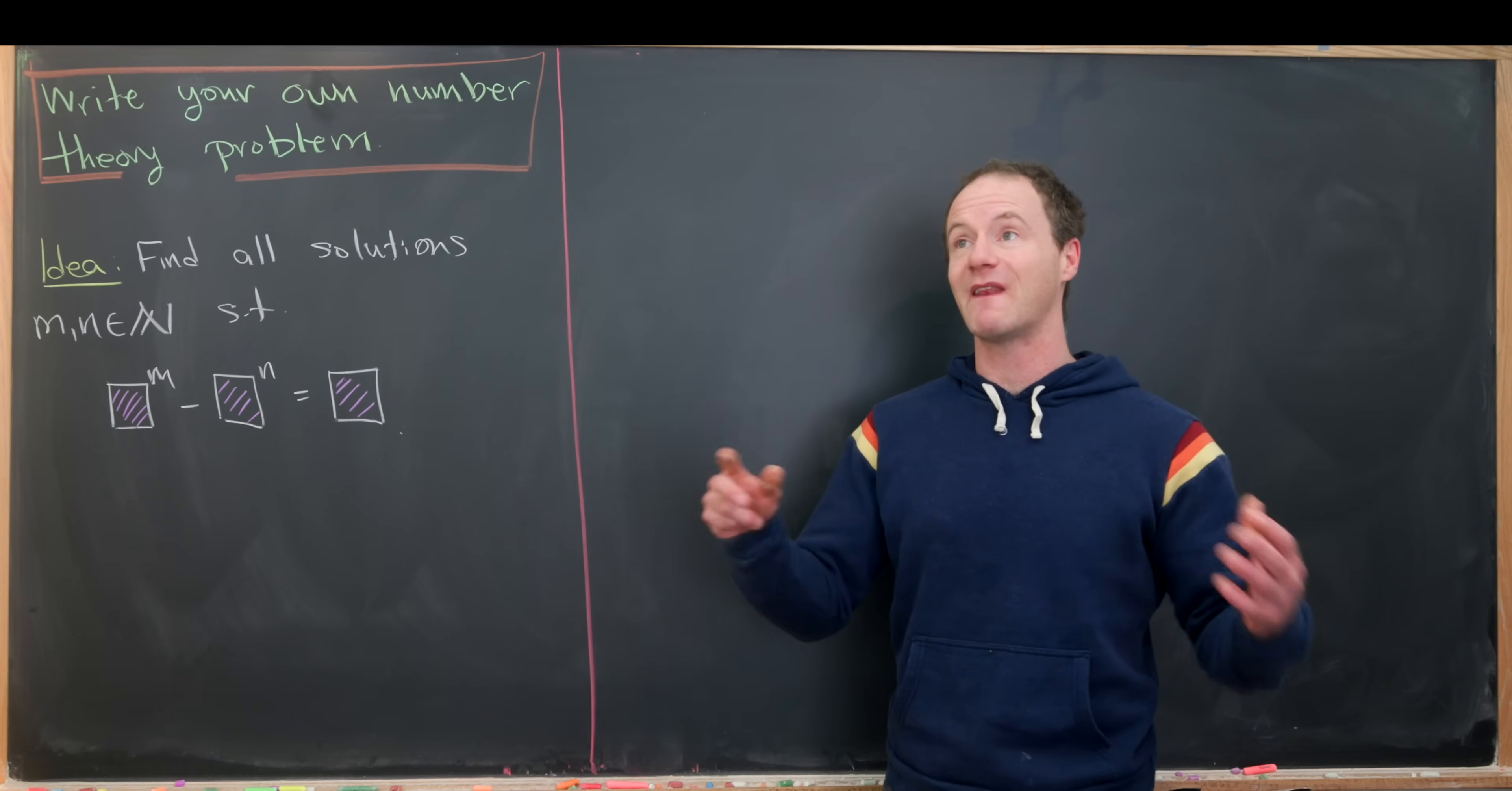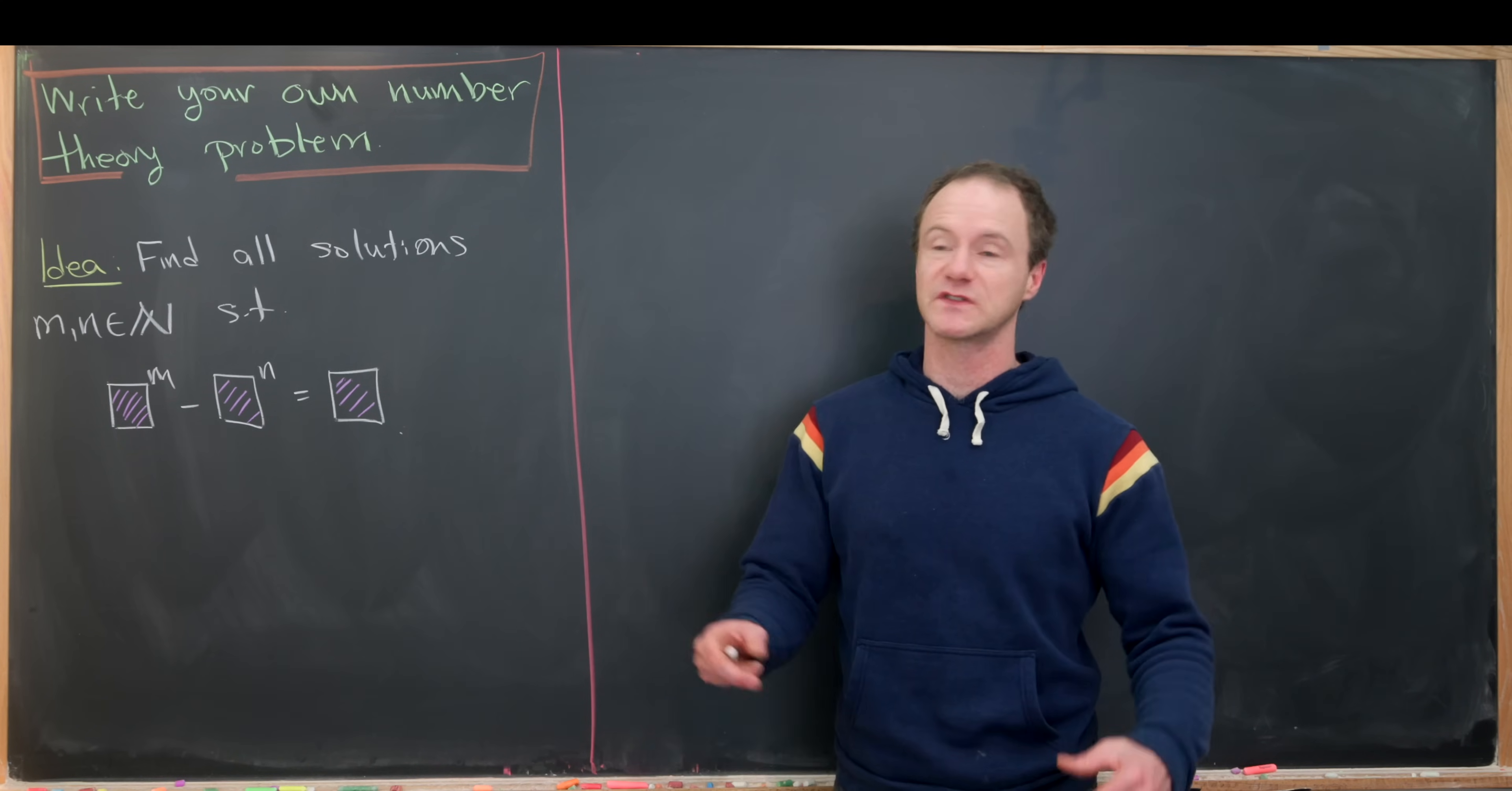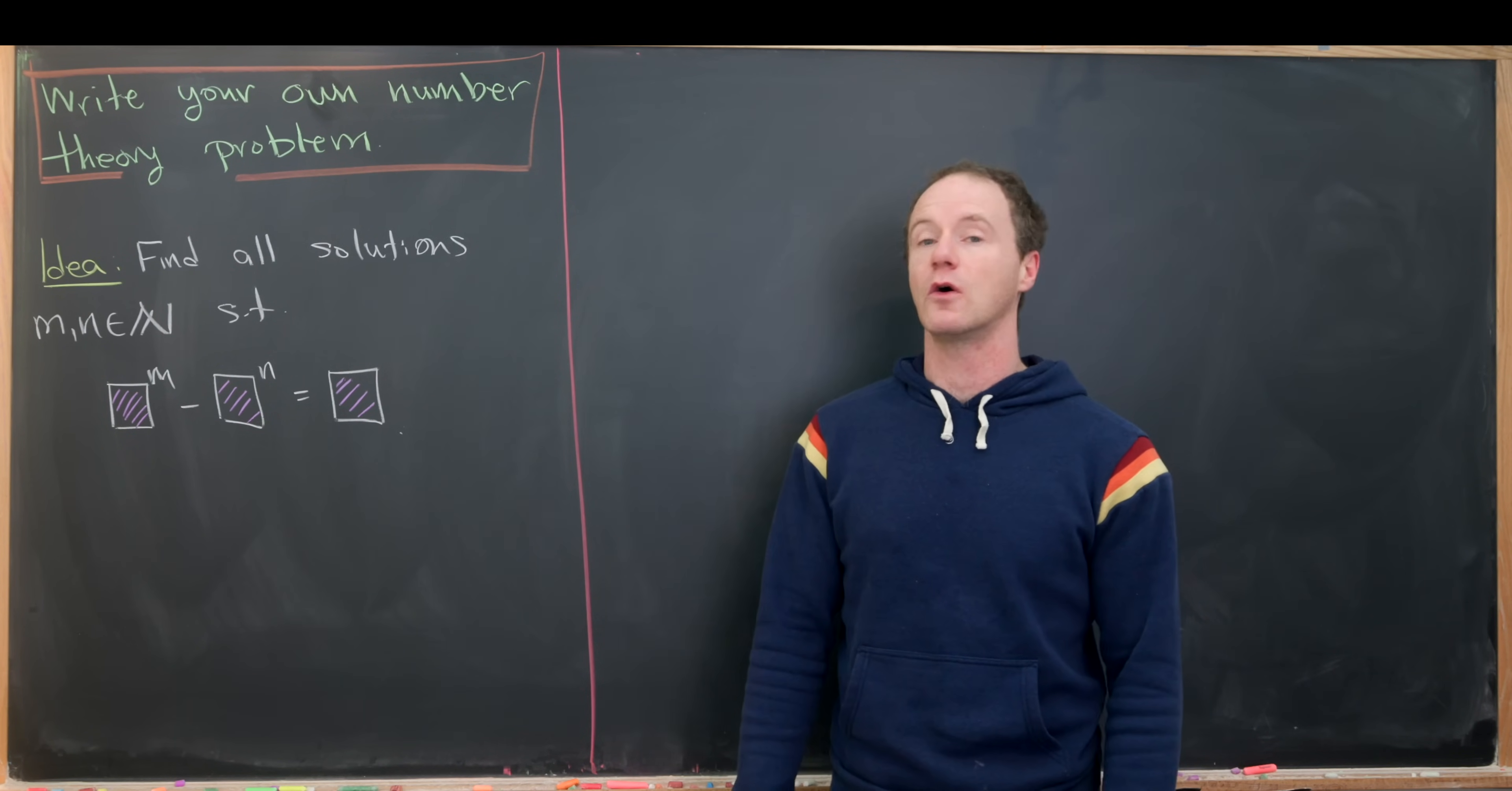In practice, what we'd like to end up with is something like a unique solution for m and n. In other words, we fill in these boxes with numbers so that there's only a single solution, or if there's more than one solution, they're both easy to find, and in the end it's easy to show that those are the only solutions.